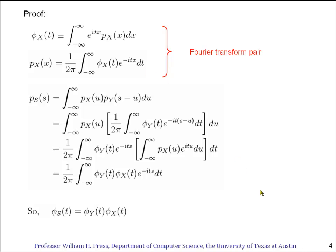You can look up here to see that. So therefore that completes the proof. We've proved that the characteristic function of s is equal to the product of the two characteristic functions.